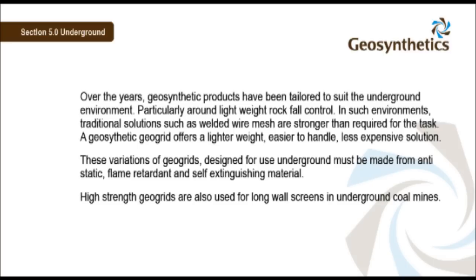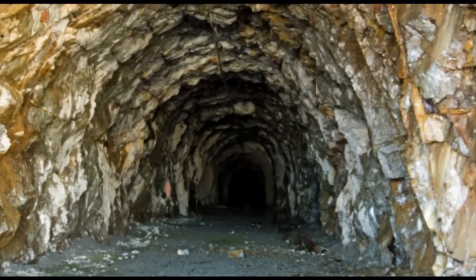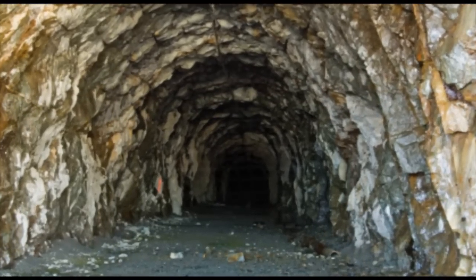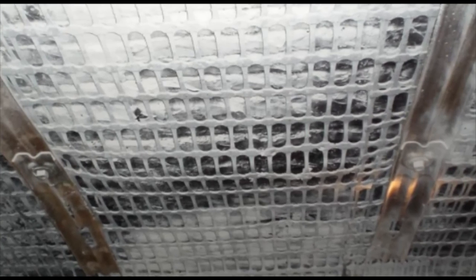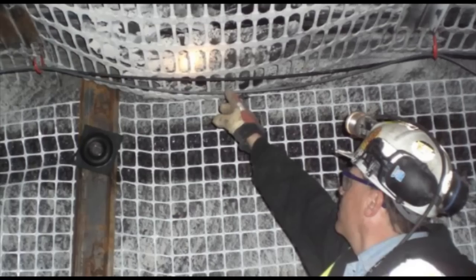High strength geogrids are also used for long wall screens in underground coal mines. Underground miners work in confined spaces. Apart from large rock falls and collapses, the exposed underground surface may have the occasional rock spall. Smaller rocks as large as a fist may separate from the wall's surface. Lighter weight geogrids are used to contain rock spalls on tunnel sides and roofs.